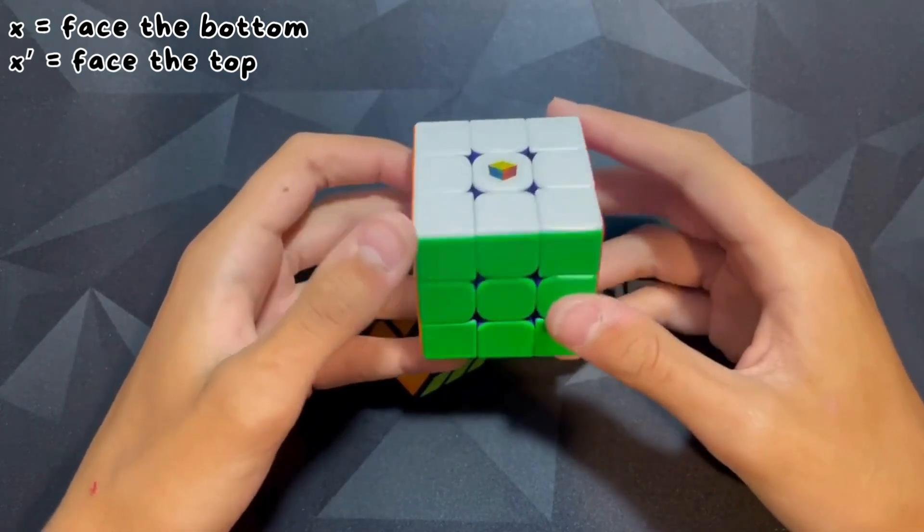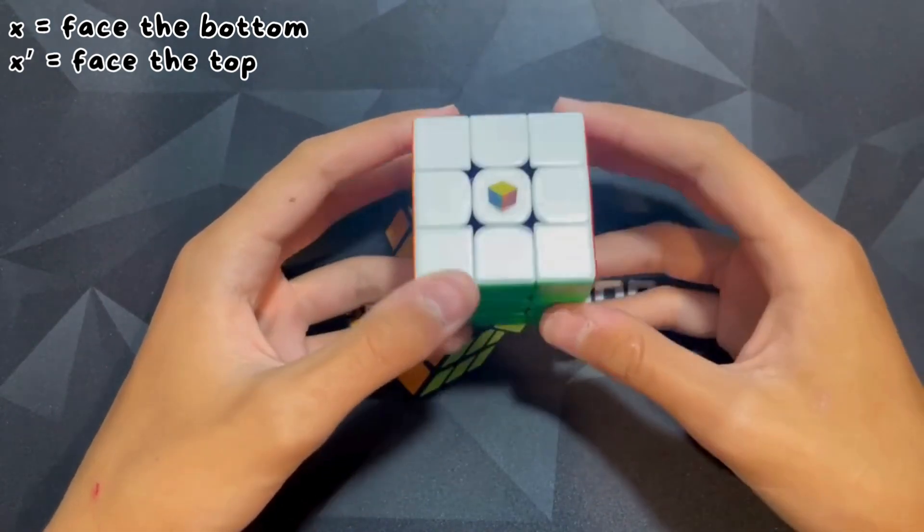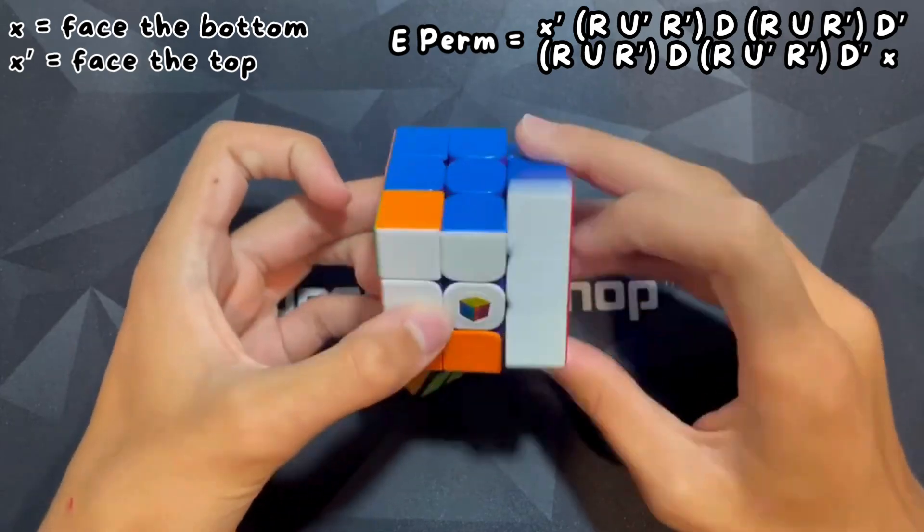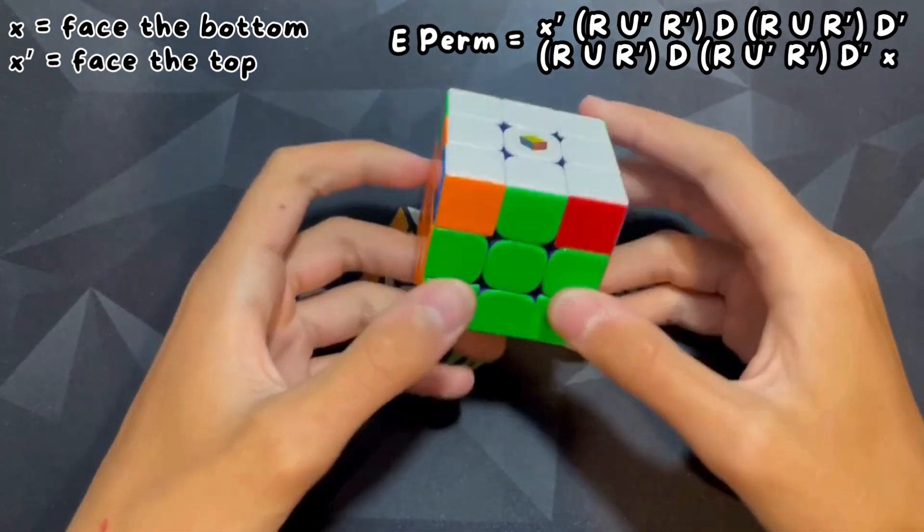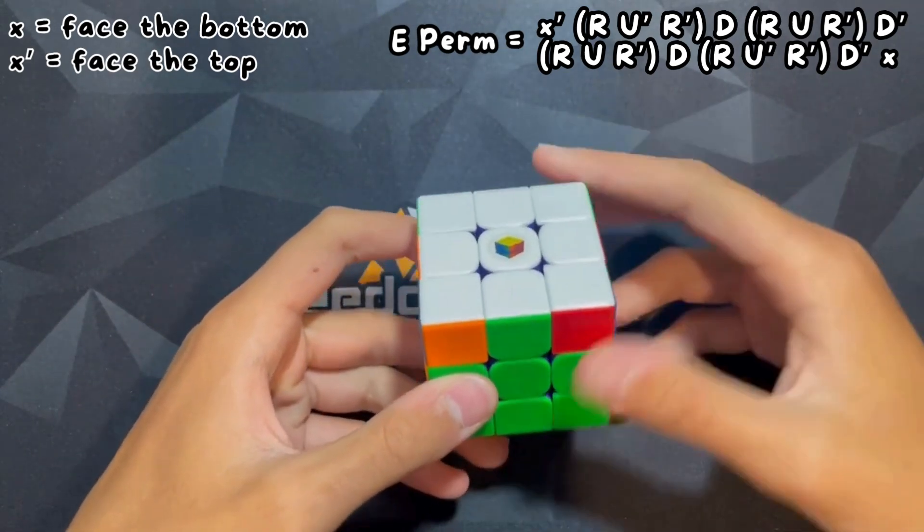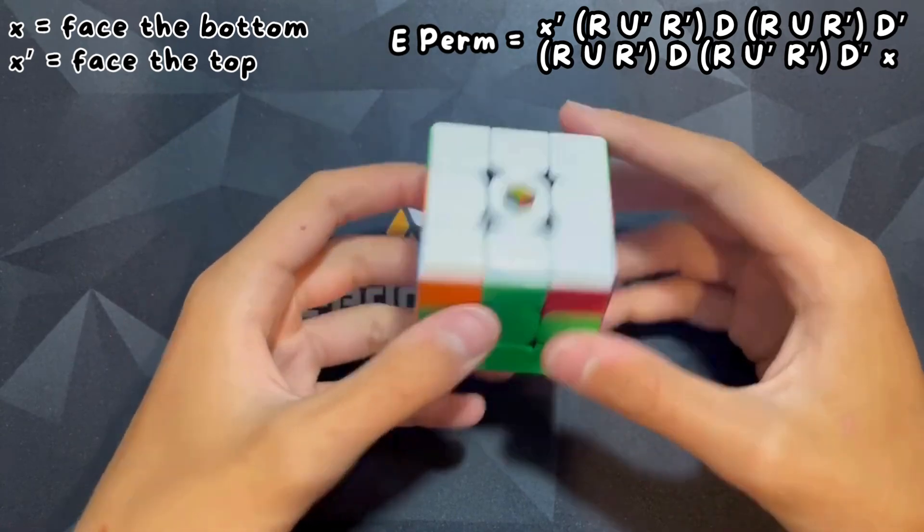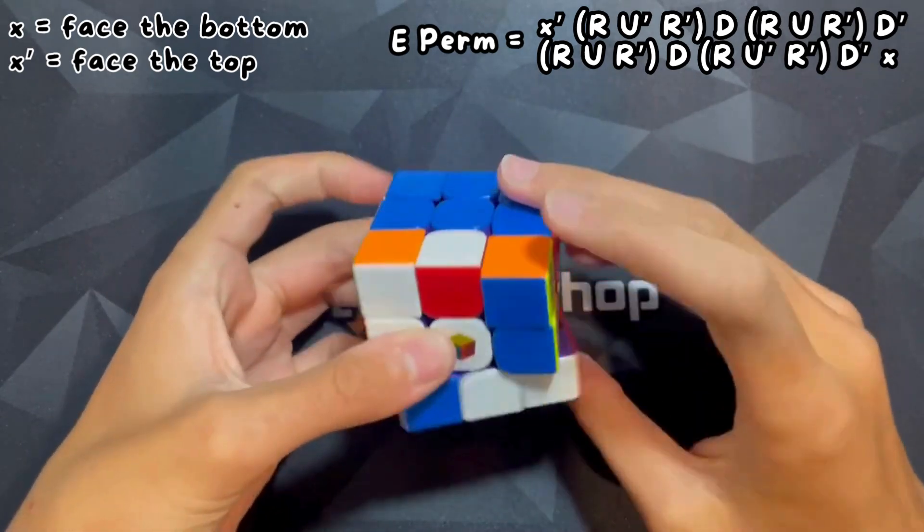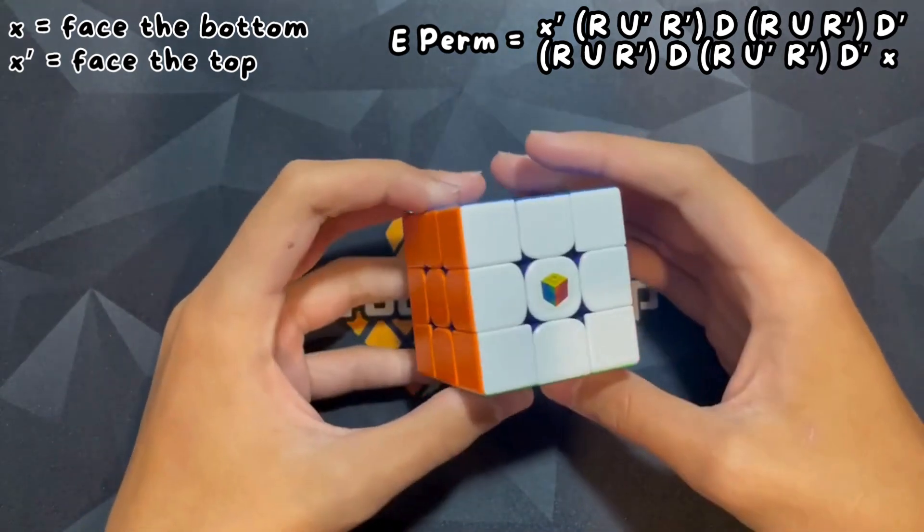A good example for this is the E perm. So you face the top, do your algorithm E perm. You can see right there, face the top, do the rest of the algorithm just like that.